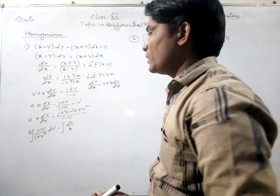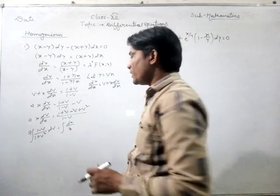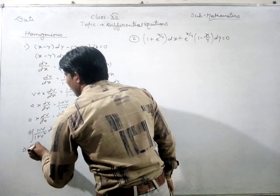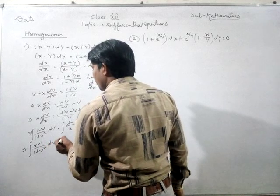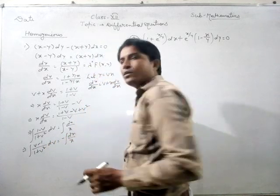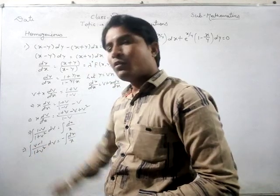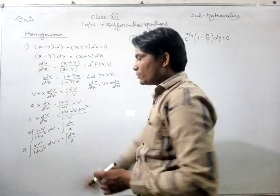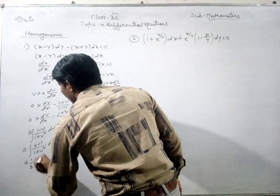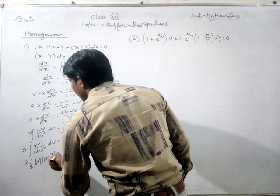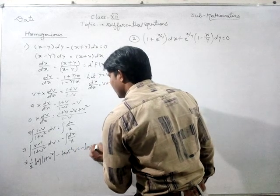Now, taking the negative common and transferring, the terms become (v minus 1) upon (1 plus v squared) dv equals minus dx upon x. Splitting the terms as v upon (1 plus v squared) minus 1 upon (1 plus v squared). Integrating v upon (1 plus v squared) gives one half log(1 plus v squared).